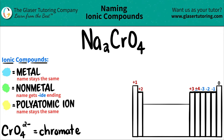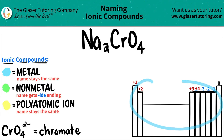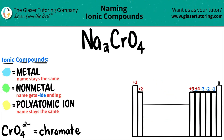In this case, we have three elements: sodium (Na), chromium (Cr), and O for oxygen. So it's always best to identify the polyatomic first and then work from there. The hard part is that polyatomics are never going to be on the periodic table — they are memorized.